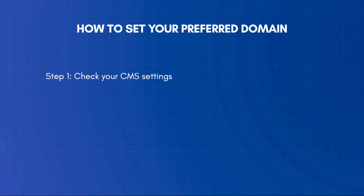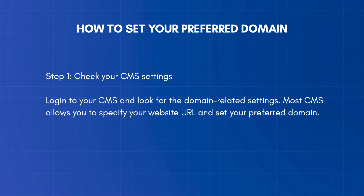The first step is to check your CMS settings. Log in to your CMS and look for the domain-related settings. Most CMS platforms allow you to specify your website URL and set your preferred domain.